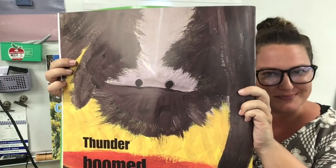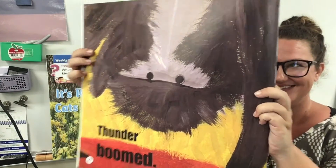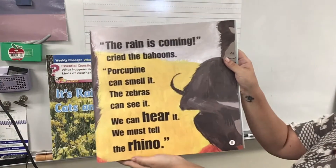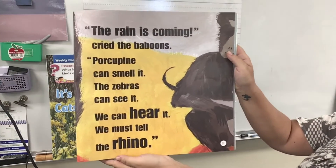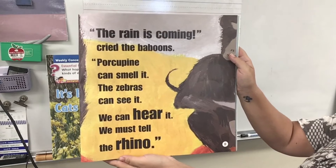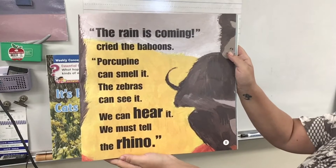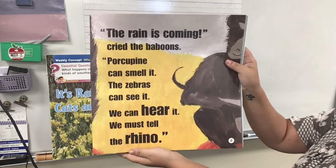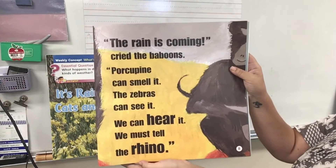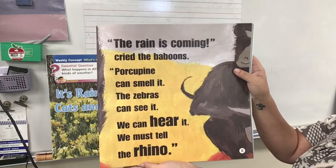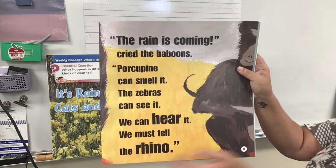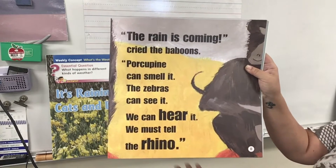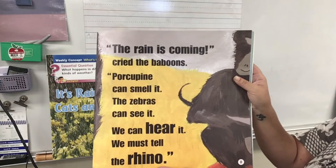Thunder boomed. 'The rain is coming,' cried the baboons. 'Porcupine can smell it. The zebras can see it. We can hear it. We must tell the rhino.'